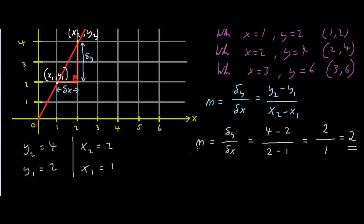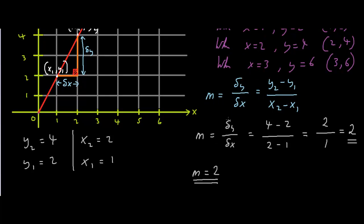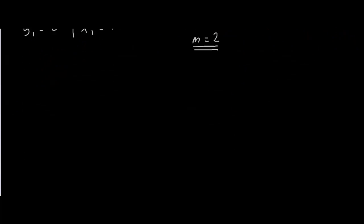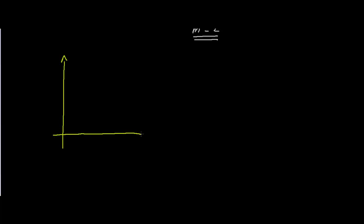So using this formula, we've confirmed that the gradient is 2. Now, when you're dealing with straight lines, the gradient can only be one thing. So in this case, the gradient is 2, as we're dealing with the line y equals 2x. But when we're dealing with curves, the gradient of the curve is different at different points. And for this, we differentiate.